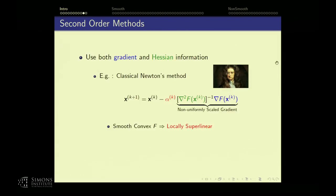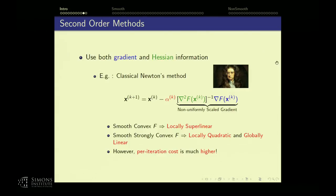This non-uniformly scaled gradient gives a locally super-linear convergence rate, and locally quadratic with strong convexity. Globally also linear — we can show recently this is also globally linear. But the per-iteration cost is high. Even if you don't form and invert the matrix explicitly, at the end of the day you have to deal with some kind of matrix. What I'm going to talk about are methods that try to alleviate this problem while maintaining these rates.